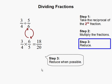Step 3, reduce when possible. 18 over 20 can be reduced. 18 can be divided by 2, and 20 can be divided by 2. And the resulting fraction is 9 over 10, and that cannot be reduced any further.